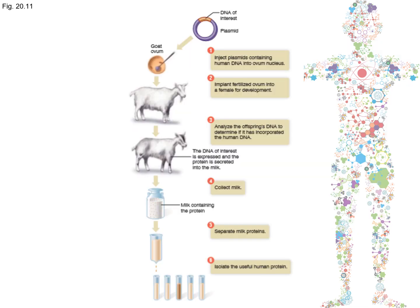Here is an overview of how gene farming is done. Plasmids containing the DNA of interest are injected into the nucleus of a mature egg cell. This egg cell is then implanted into a female dairy animal. The offspring's DNA is analyzed to see if it has incorporated the desired DNA. If the desired DNA is expressed, the protein will be secreted in the milk, which is then collected for the isolation of the desired human proteins.